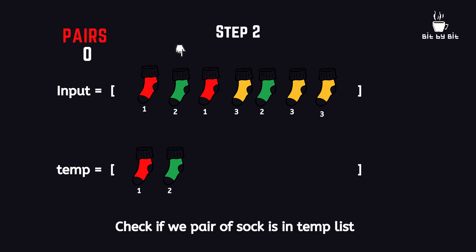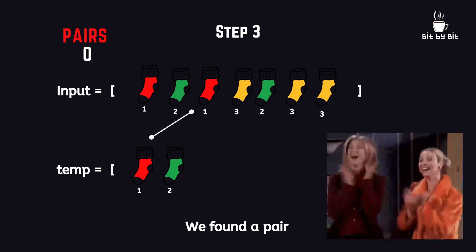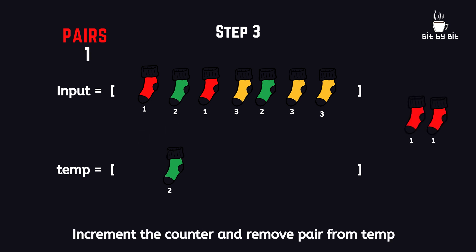Same thing with the second sock. As the green sock is not stored inside the temporary list, we just add the second sock inside the temporary list and move on to the third sock. Now we finally found our first pair. After checking, we found out that the third sock in the input list is a red sock, which is number 1, and we have already stored another red sock inside the temporary list. Now we remove the red sock from the temporary list and increment our counter by 1, indicating that we have found our first pair.